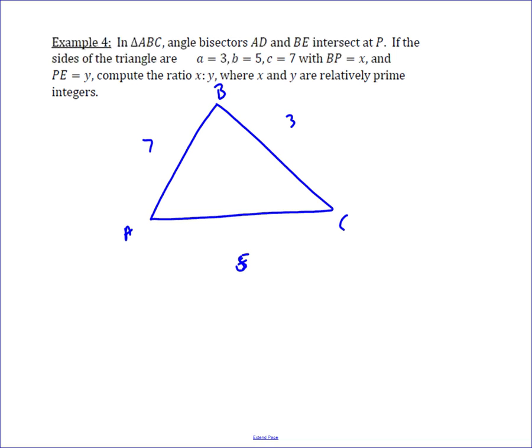It says then you draw in AD, which is the angle bisector of A, and BE, which is going to be the angle bisector of B, and then they intersect at point P.